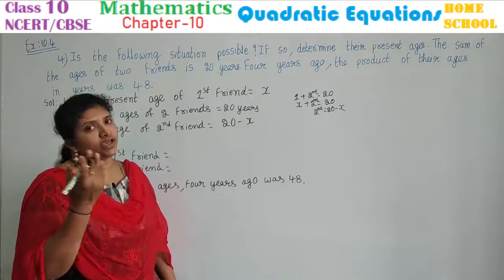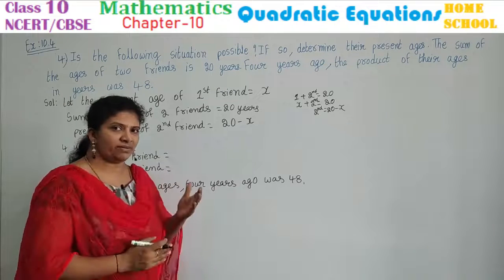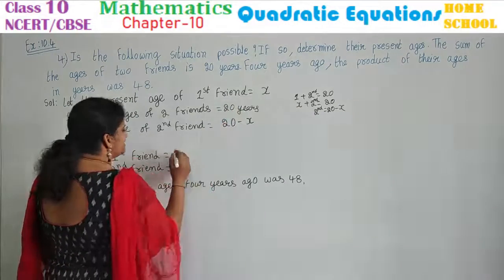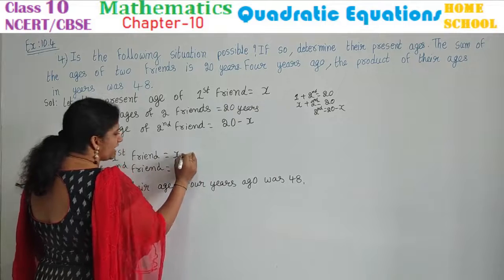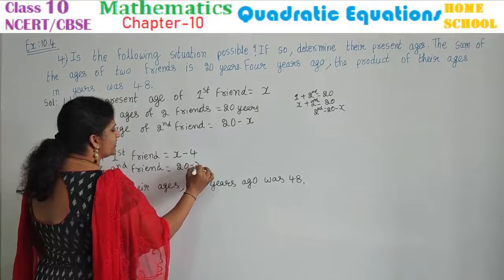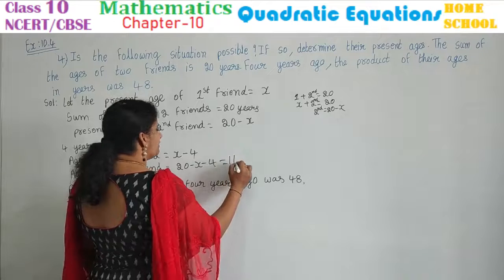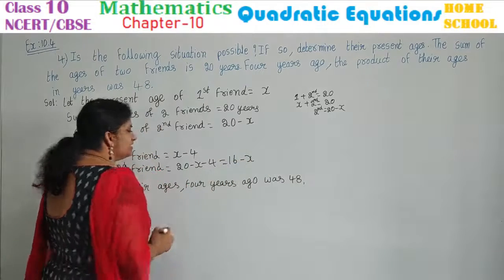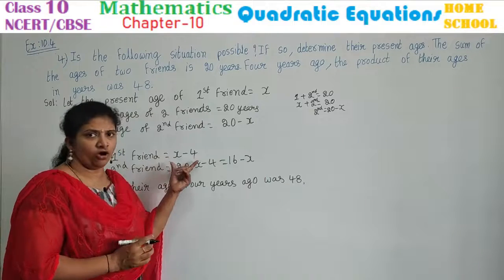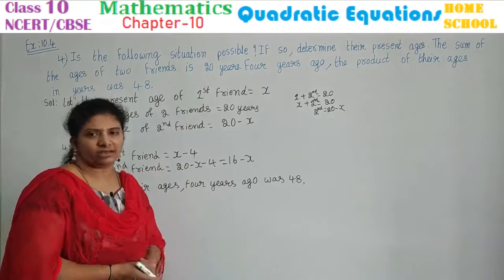Next step: 4 years ago means both friends' ages will be reduced by 4. Age of first friend 4 years ago is x minus 4. Second friend's present age is 20 minus x, so 4 years ago it is 20 minus x minus 4. That is, 20 minus 4 equals 16, so second friend's age 4 years ago is 16 minus x.